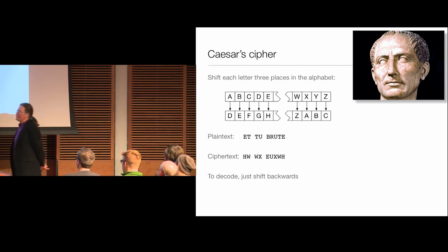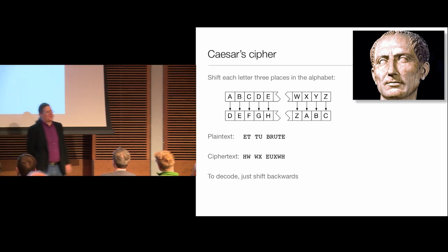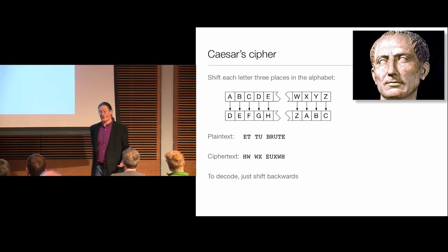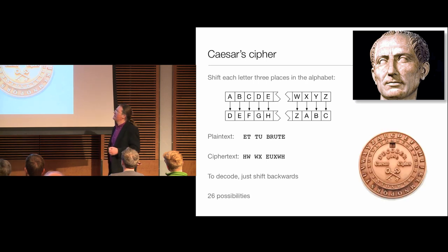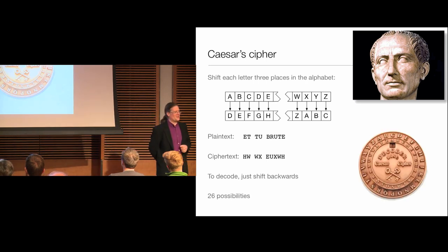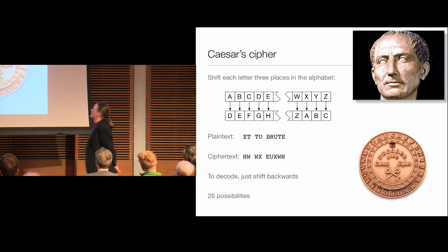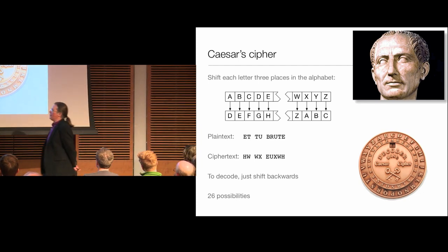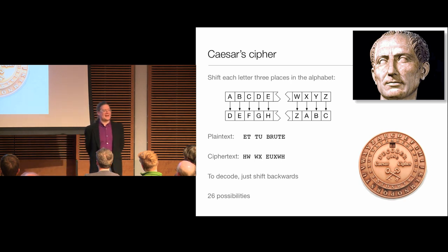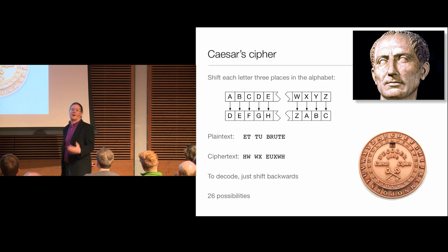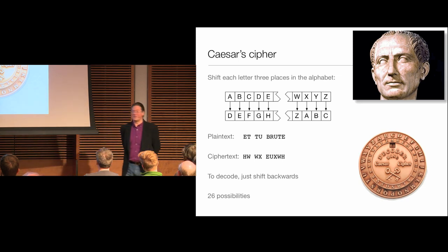One drawback of this system is that if you consider all codes of this kind, there are really only 26 possibilities — only 26 ways to adjust this decoder ring, or 23 in Caesar's day. So if you know it's this type of code, you only have 20-something things to try, and you, the eavesdropper, will be able to successfully decode the message.